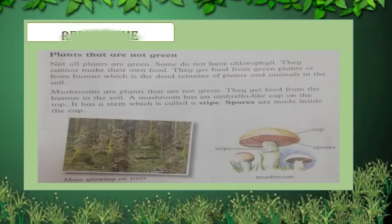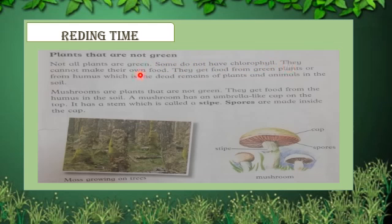Now students, it is our reading time. We read the topic: plants that are not green. Not all plants are green. Some do not have chlorophyll; they cannot make their own food. They get food from green plants or from humus, which is the dead remains of plants and animals in the soil.